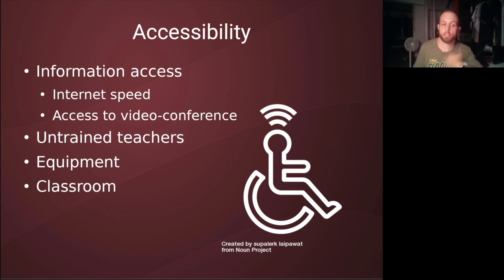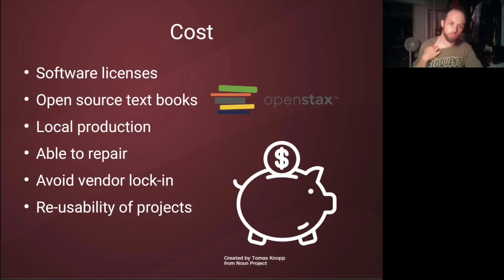So what can free and open source software and methods do in these areas? In terms of costs, there are many things that can be done. Software licenses is one of the first ones that comes to mind. If I have a school and I have to buy software licenses for every single piece of software that I run on my computers and the computers that students are using, that's a high cost. So open source licenses can help overcome this. Open source textbooks are another important issue — textbooks also become a very high cost for many families.